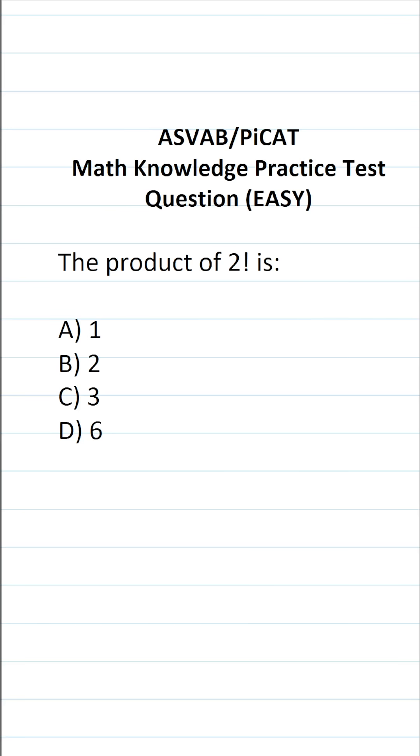This math knowledge practice test question for the ASVAB and PiCAT says the product of 2 factorial is. Again, this exclamation point, as you just heard, is read as factorial. And again, this is a pretty easy question because factorials are pretty easy to understand.